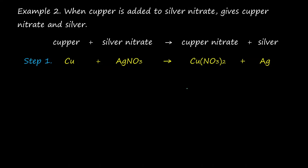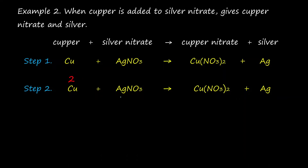The second step is to place the total valence of each atom above it. The valence for copper is 2. The valence for silver in silver nitrate is 1, and the valence of nitrate in silver nitrate is also 1. The valence of copper in copper nitrate is 2, and the valence of nitrate in copper nitrate is also 2.